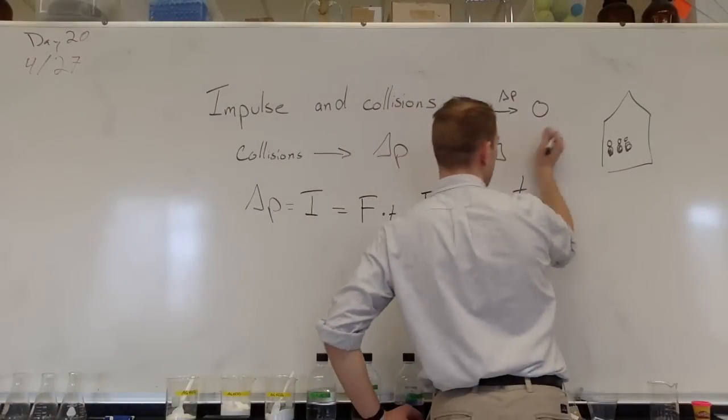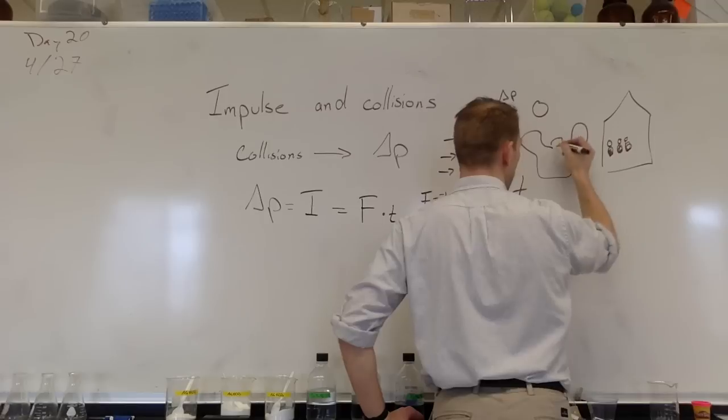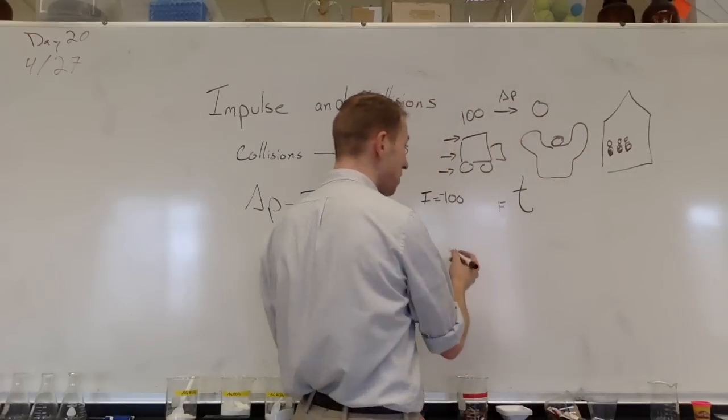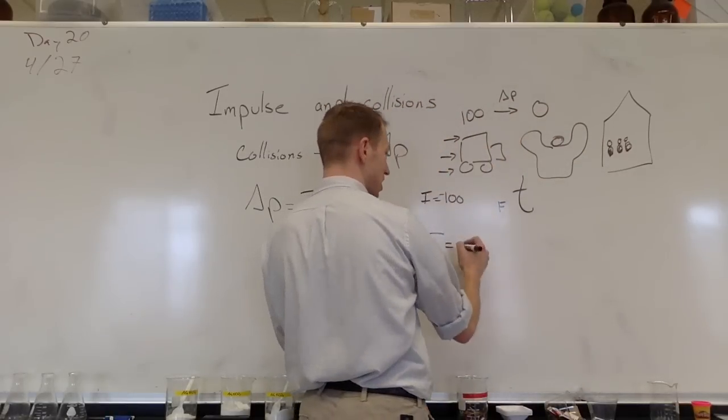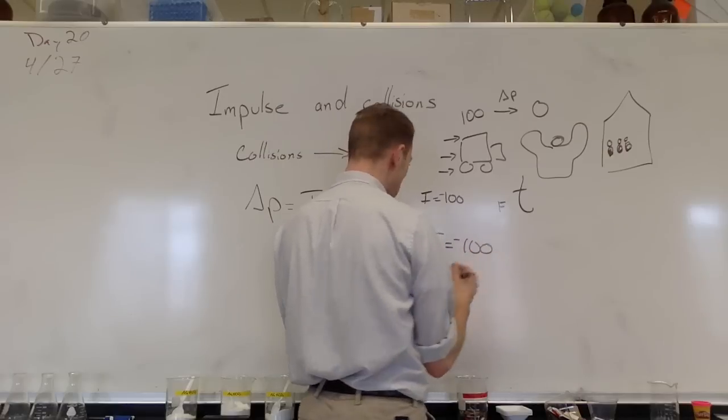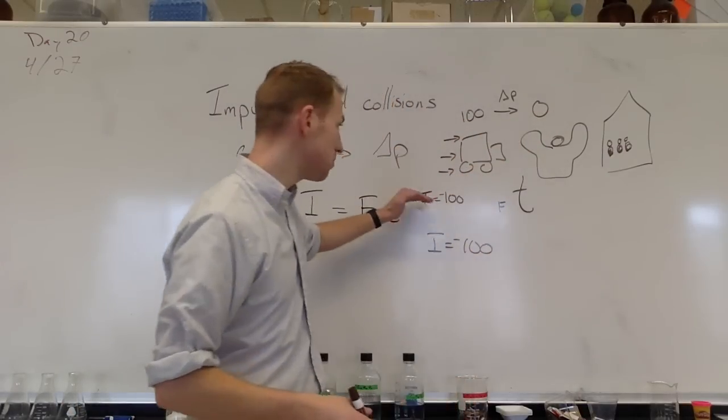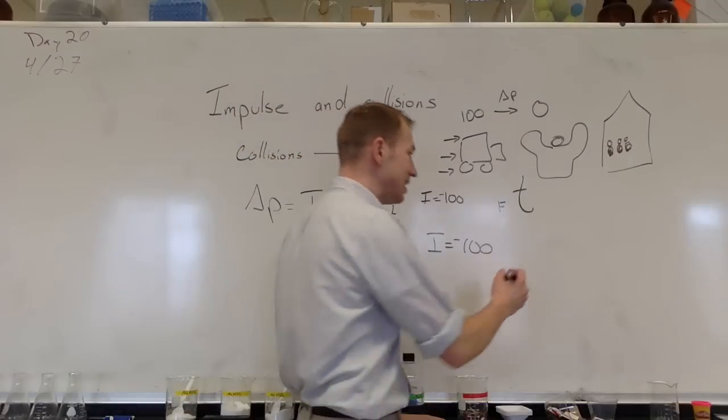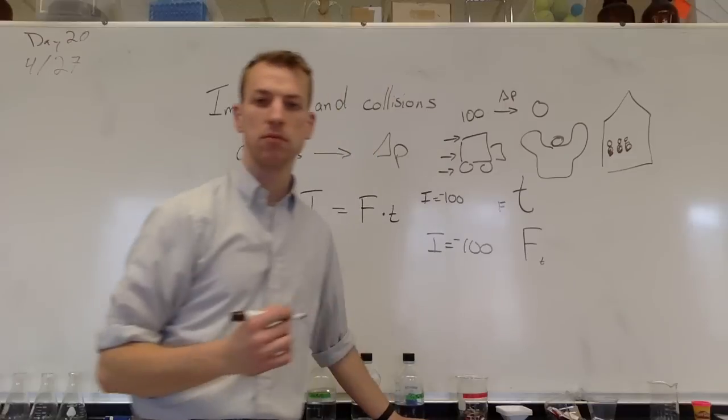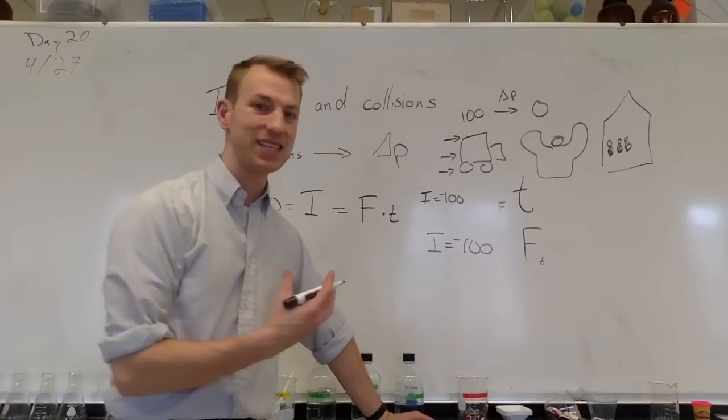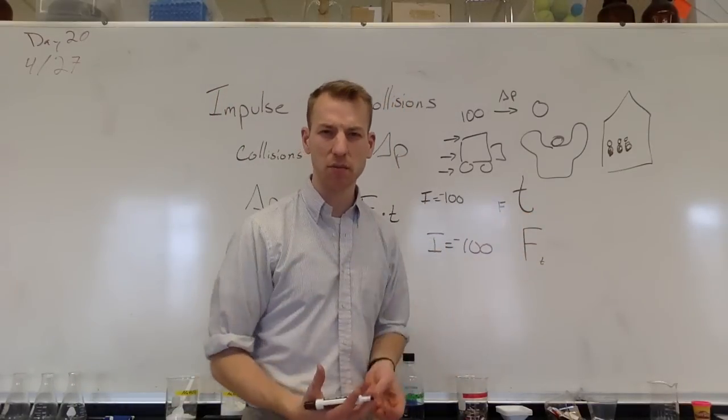Whereas if this were the Hulk, the impulse would be the same because the momentum was the same and we want to change it to 0. In either case, we want to go from 100 to 0, so the impulse is the same. He might be able to apply a lot of force really quickly. So we can use this idea of force multiplied by time to change our momentum.